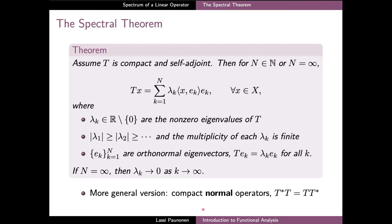Finally, we can note that this result is typically presented in the more general case of compact and normal operators. The operator T being normal is defined as the property that the adjoint of T composed with T equals T composed with its adjoint — alternatively, T commutes with its adjoint. This is strictly more general than self-adjointness; in the more general situation T has a spectral decomposition, but with important differences, since if T is not self-adjoint the eigenvectors need not form an orthonormal set and the eigenvalues need not be real.